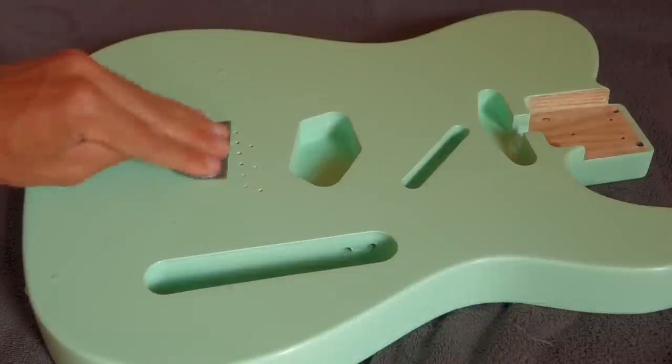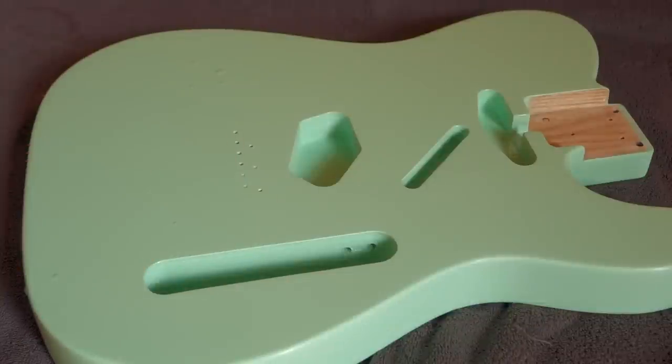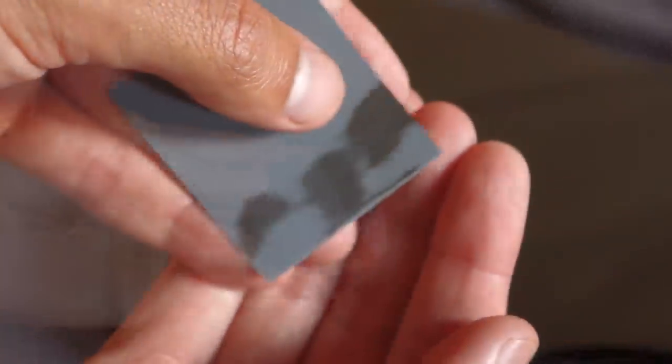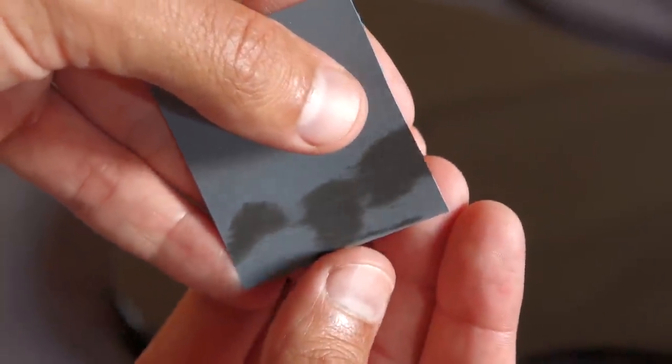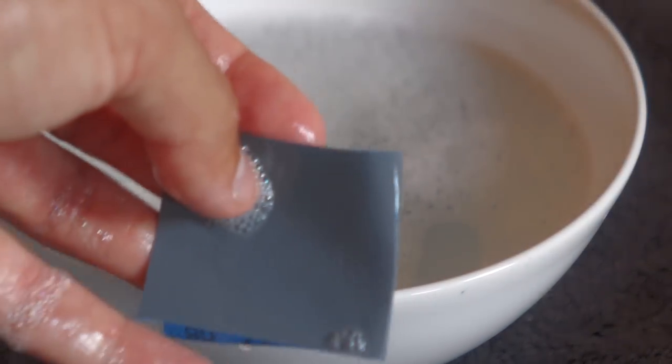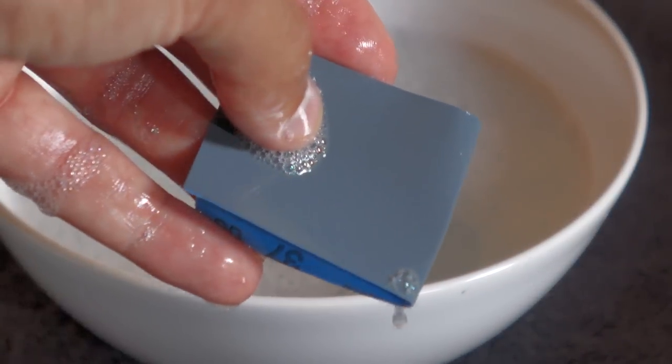All of the sanding that I'll do in this video will be wet sanding. That means I'll use water as a lubricant. That'll leave the surface a little bit more smooth compared to dry sanding. But the main reason to wet sand for me is that it doesn't clog up the sandpaper. That means you can sand an entire guitar with just a few pieces of sandpaper. Just make sure your sandpaper is suitable for wet sanding.